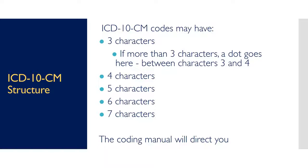An ICD-10-CM code might only be 3 characters, or it might need 4, 5, 6, or 7 characters. How will you know how long it's supposed to be? The coding manual will tell you. With signs, symbols, and notations, you will see exactly how long that code needs to be. Also note that when the coding manual tells you that a 5th character or a 7th character is required, that is not optional, it is not a suggestion — it is mandatory. Any code you report with fewer characters is invalid.